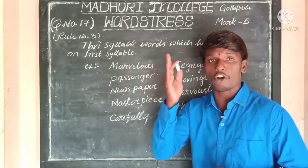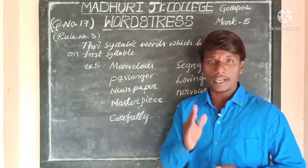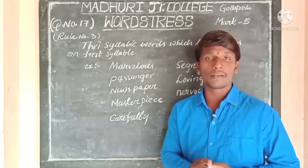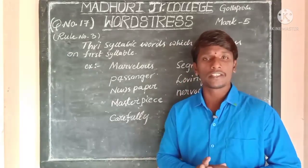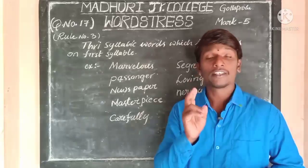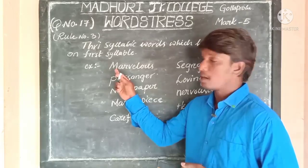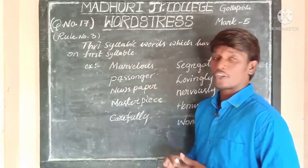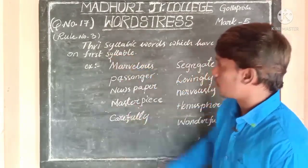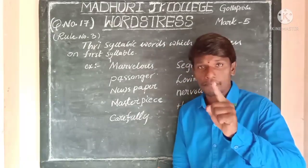Dear students, before you make a stress on a particular syllable, you should not consider letters — you should consider the sounds, or you should consider the syllables. Look at the word 'marvelous.' Marvelous — M-A-R-V-E-L-O-U-S — there are 3 syllables, so it is a trisyllabic word and stress takes place on the first syllable. It is not the first letter; it is on the first syllable.